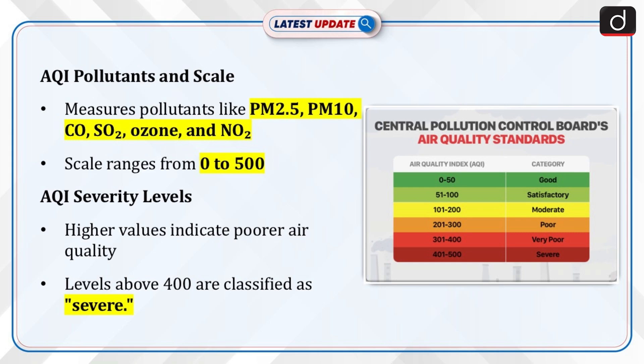AQI measures harmful pollutants in the air such as PM2.5, PM10, carbon monoxide, sulfur dioxide, ozone, and nitrogen dioxide on a scale from 0 to 500. Higher AQI values indicate poorer air quality, with levels above 400 considered severe.